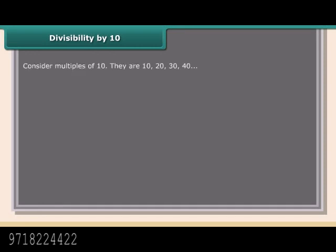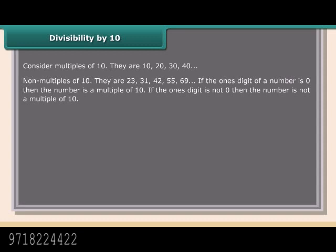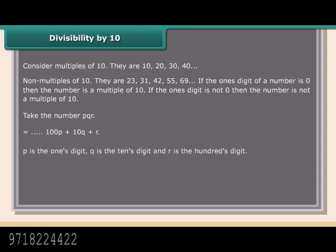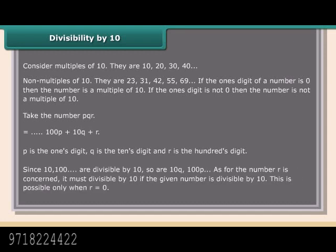Divisibility by 10: the multiples of 10 are 10, 20, 30, 40, and non-multiples include 23, 31, 42, 55, 69. If the ones digit of a number is 0, then the number is a multiple of 10; if not, it isn't. For a number PQR = 100P + 10Q + R, since 100P and 10Q are divisible by 10, the digit R must also be 0 for the number to be divisible by 10.